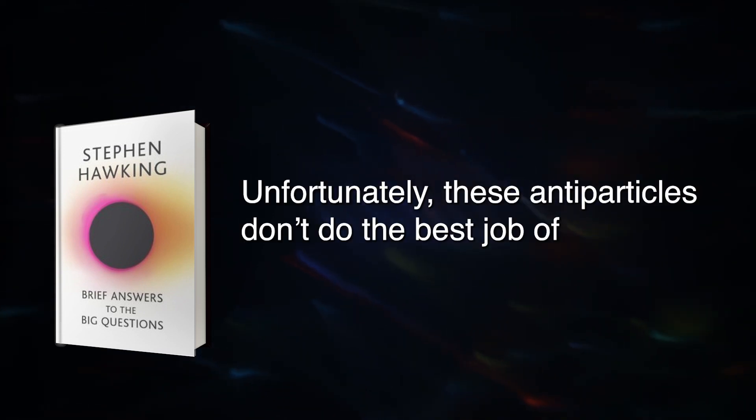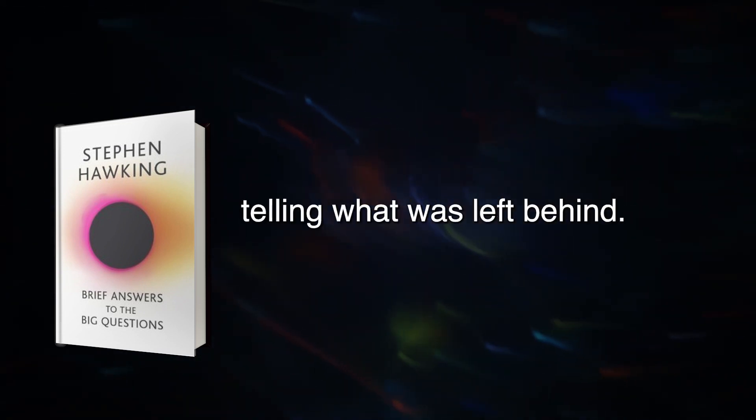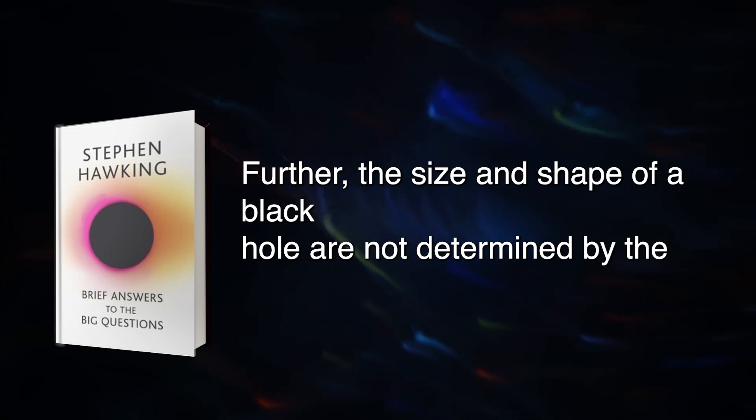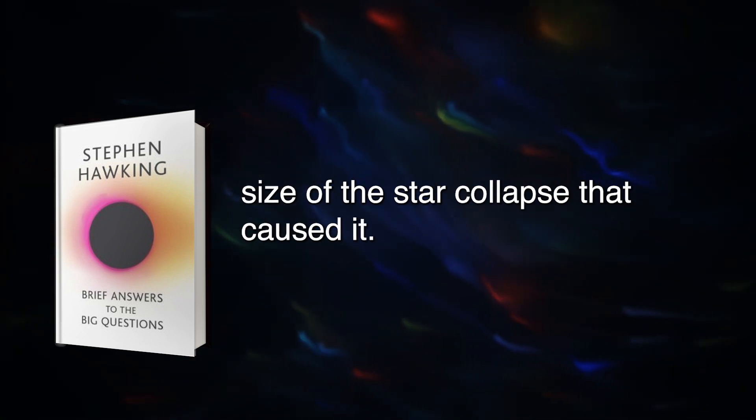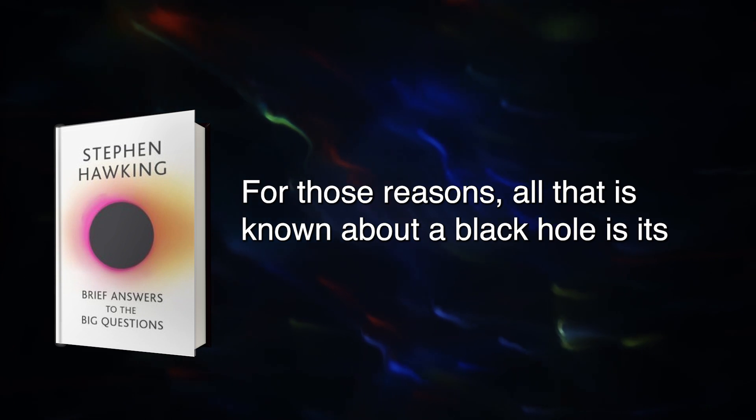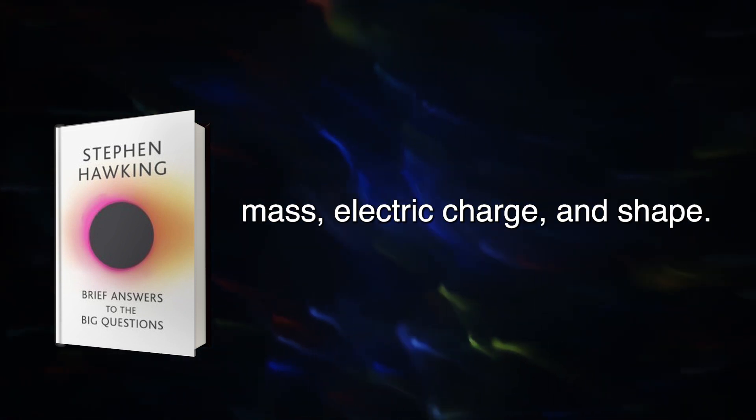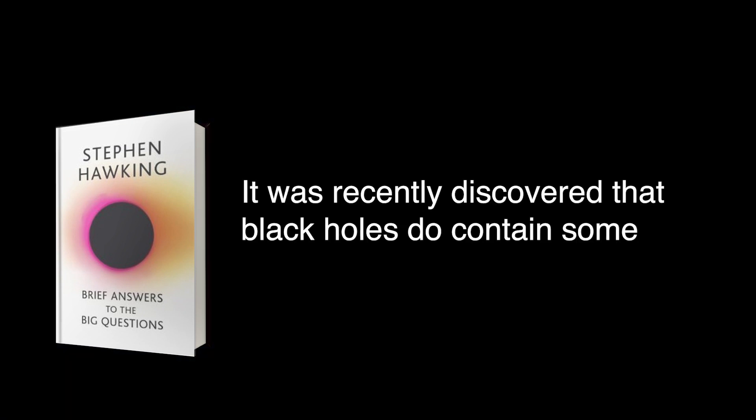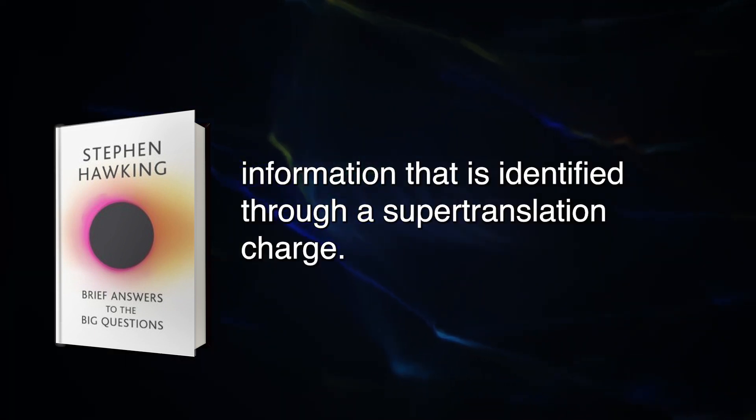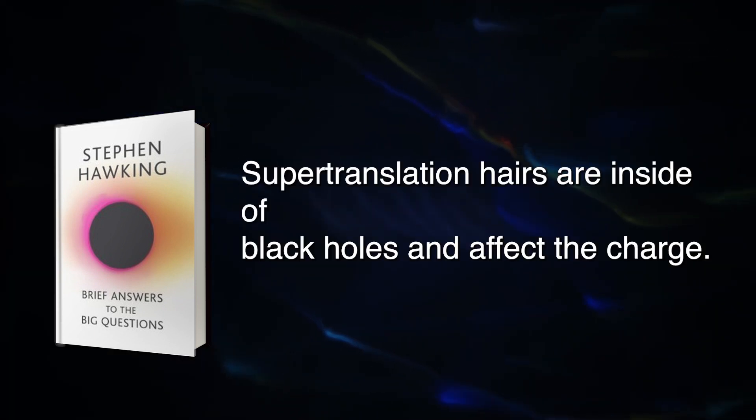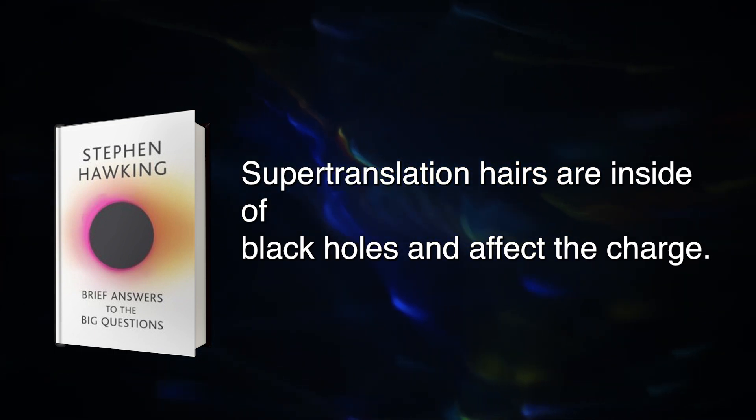Unfortunately, these antiparticles don't do the best job of telling what was left behind. Further, the size and shape of a black hole are not determined by the shape or size of the star collapse that caused it. For those reasons, all that is known about a black hole is its mass, electric charge, and shape. It was recently discovered that black holes do contain some information that is identified through a supertranslation charge. Supertranslation hairs are inside of black holes and affect the charge.